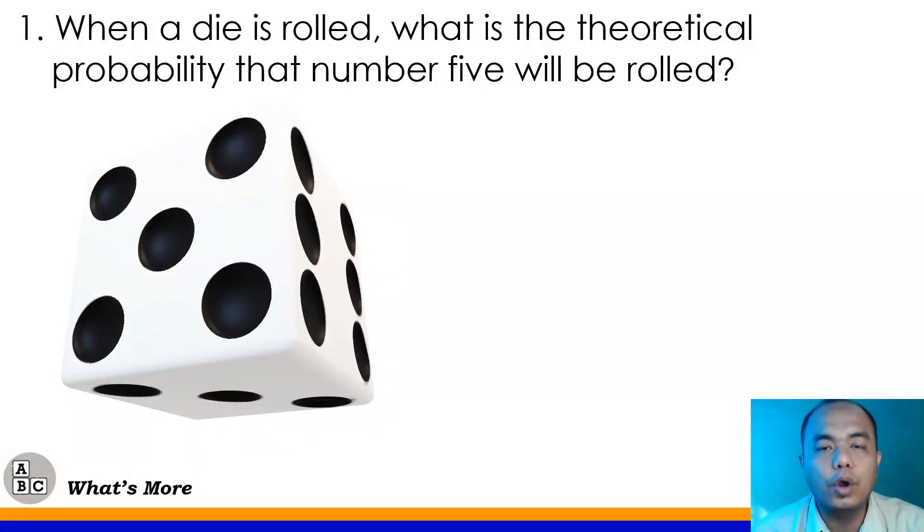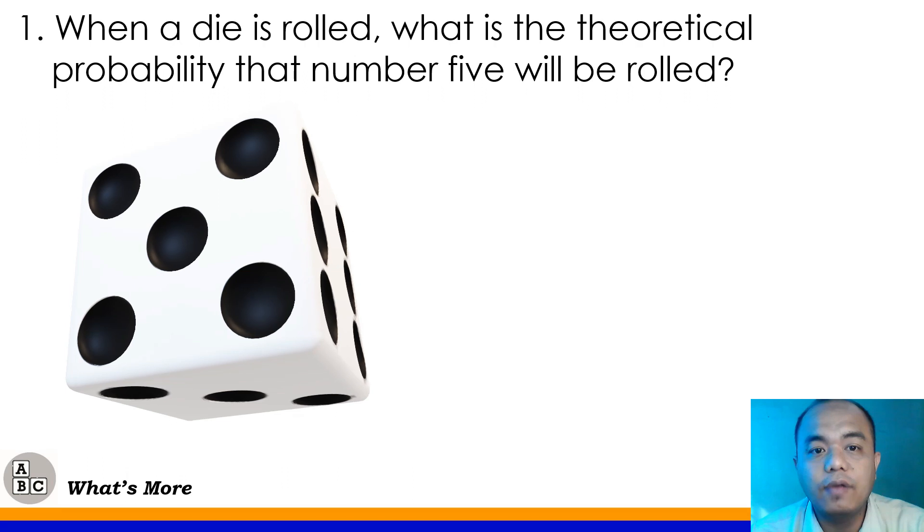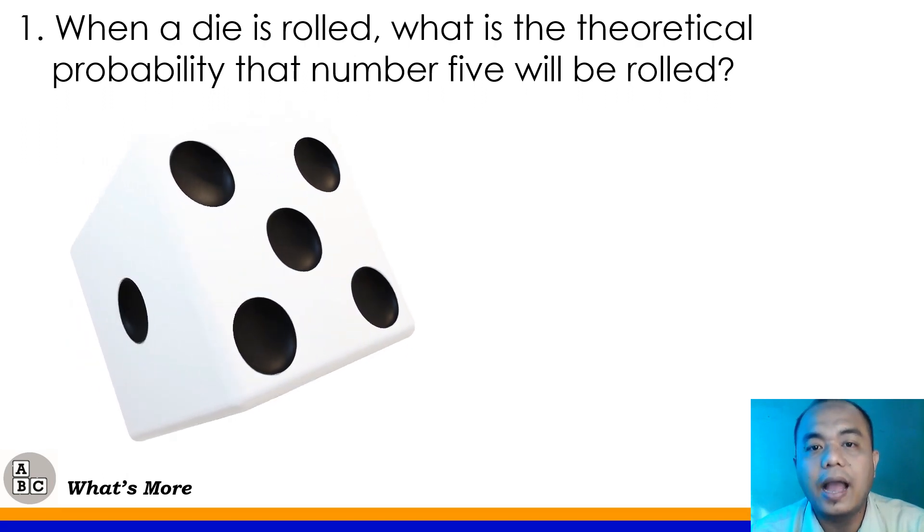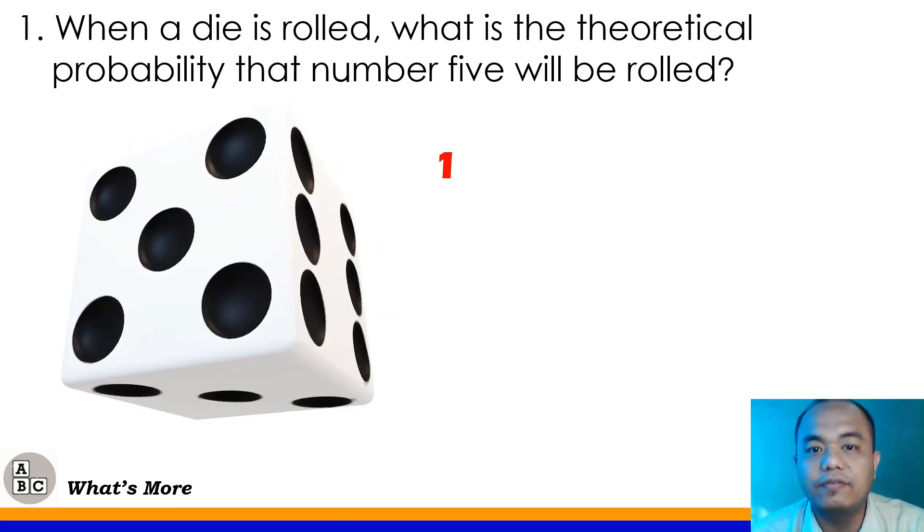Let's start with your What's More of your module number 1. When a die is rolled, what is the theoretical probability that number 5 will be rolled? So, the question in number 1 class is the probability that 5, the number 5, will appear when we roll the die. How many 5s are on a die? Very good! We have 1, right? We have 6 total. So, we have 1 out of 6 total. So, 1 over 6 is our answer.